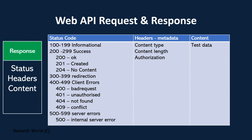Coming to the response object — the first component is the status, indicated with status codes. There are five series of status codes: 100–199, 200–299, 300–399, 400–499, and 500–599. These are the five series of status codes available in web API.